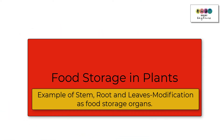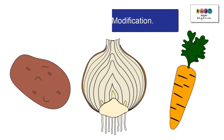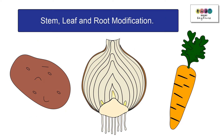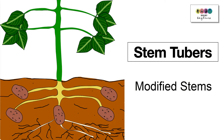We're looking at food storage in plants — specifically how stems, roots, and leaves can be modified to act as food storage organs. For our course, we just have to give an example of a stem modification, a leaf modification, and a root modification. We're going to use the potato, the onion bulb, and the carrot for our three examples.